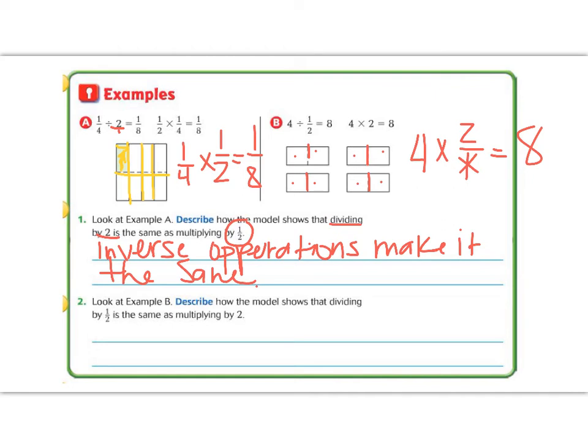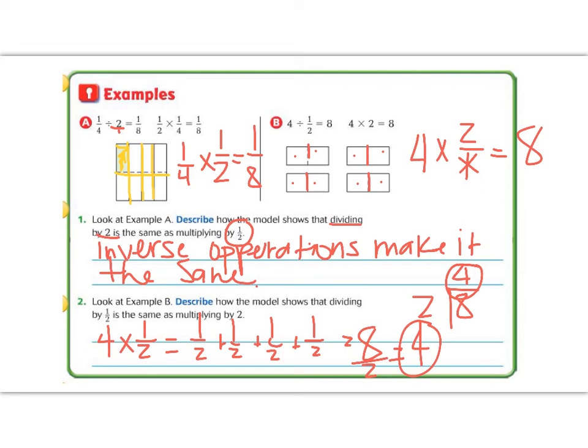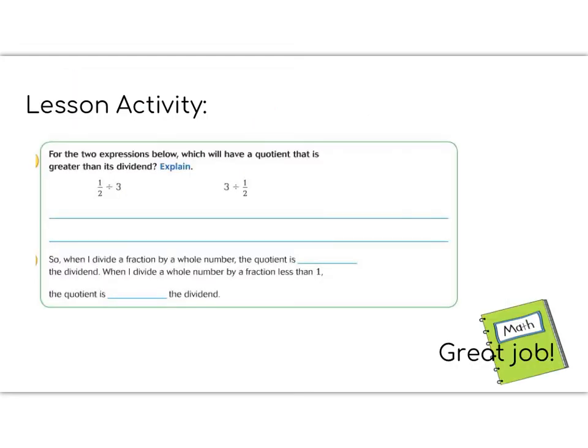Question number two says, look at example B. Describe how the bar model shows that dividing by one-half is the same as multiplying by two. So I took four, and I multiplied it by one-half. That would mean that I'm taking four groups of one-half. That would look like one-half plus one-half plus one-half plus one-half. So that would give me eight-halves, which would be four. The opposite of doing that would be to take eight and divide it by two. That would give me an answer of four. Both ways, I get an answer of four. Great job so far, fifth graders.